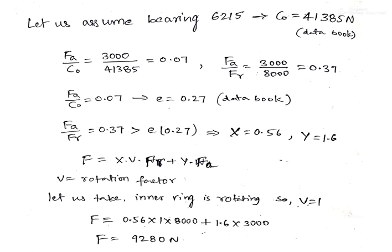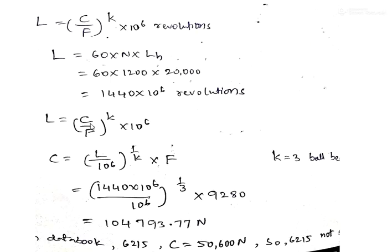Now, substituting F = 9280 N into the rating life formula to find the dynamic capacity C. First, we convert the rating life from hours to revolutions using L = 60 × N × L_H, where N is RPM and L_H is hours. Substituting gives a rating life of 1440 × 10^6 revolutions. Rearranging the formula and substituting L and F = 9280 N, we get C = 14,793.77 N.